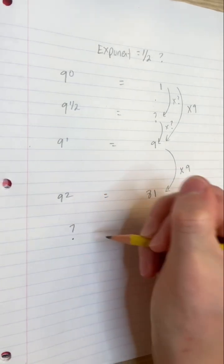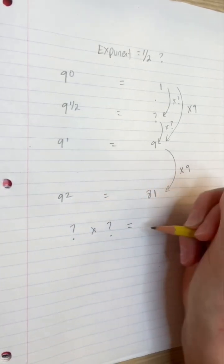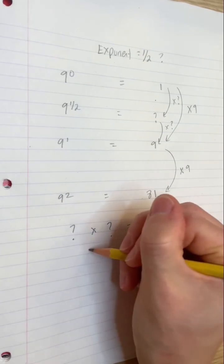Well, maintaining a multiplication pattern, we need a multiplier that, when applied twice, takes us from 1 to 9.